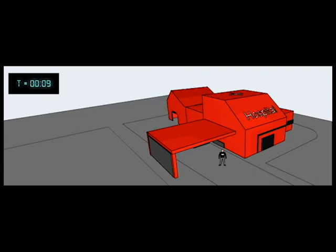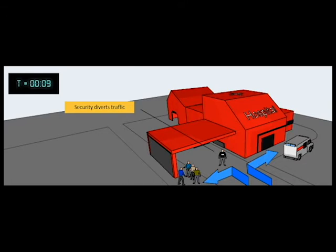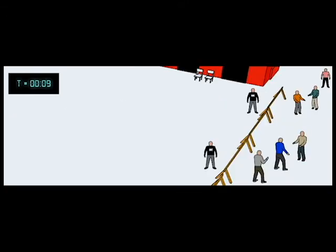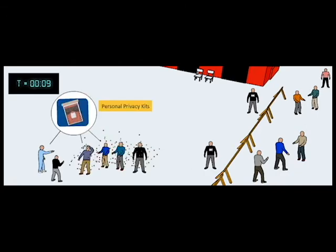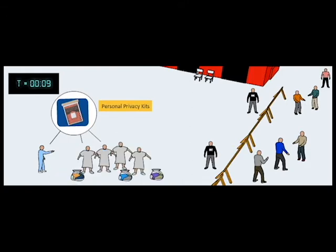Hospital security begins diverting unaffected passenger traffic and EMS vehicles away from the ambulance bay and secures the hospital decontamination zone. The security officer and an ED nurse begin distributing self-care personal privacy kits to each of the victims so they can remove and contain their own clothing.